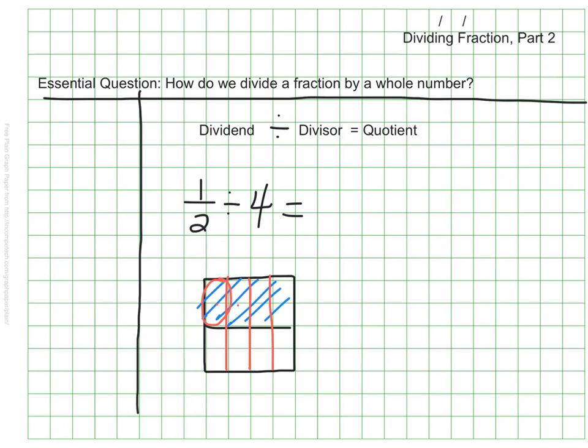Each section is 1 out of 8 of the original whole. So my answer would be 1 eighth. 1 half divided by 4 equals 1 eighth. Let's try another one.